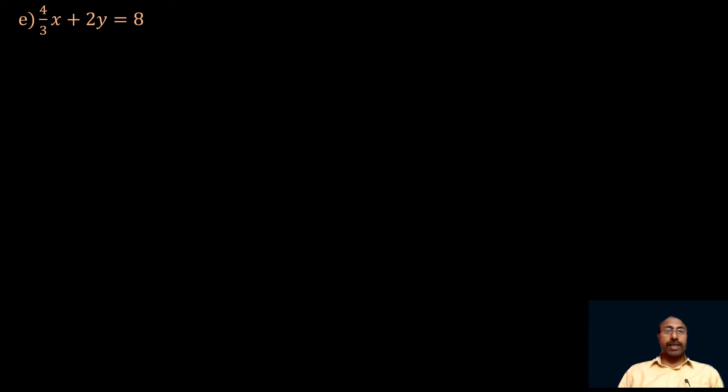The fifth one is: 4/3 x plus 2y is equal to 8, and 2x plus 3y is equal to 2. We have to check whether these two equations are consistent or not and also solve them graphically.